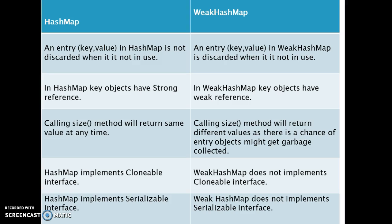Fourth difference: HashMap implements the Cloneable interface, but WeakHashMap does not implement the Cloneable interface. Fifth difference: HashMap implements the Serializable interface, but WeakHashMap does not implement the Serializable interface.